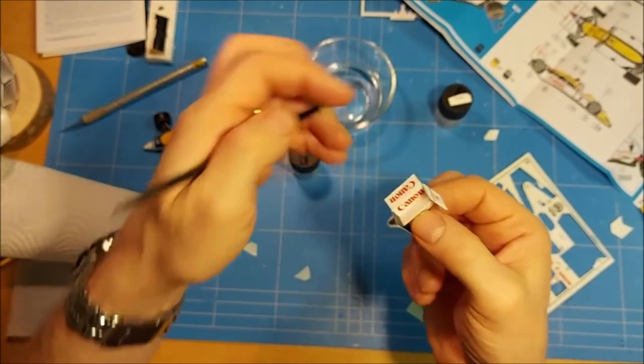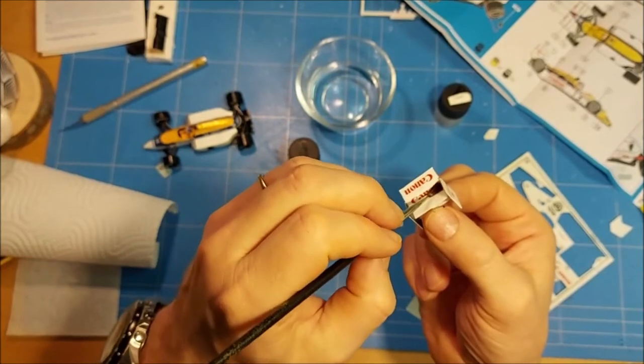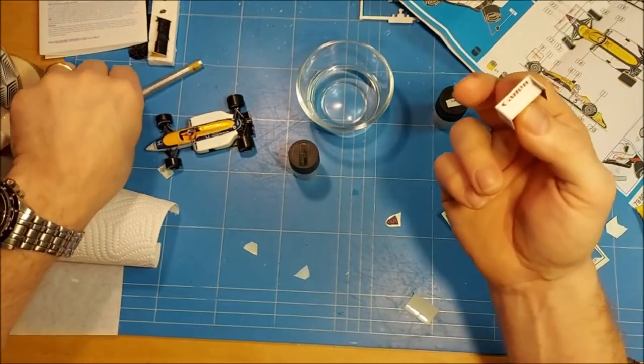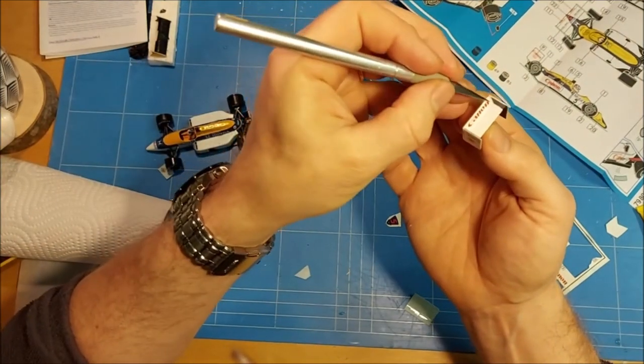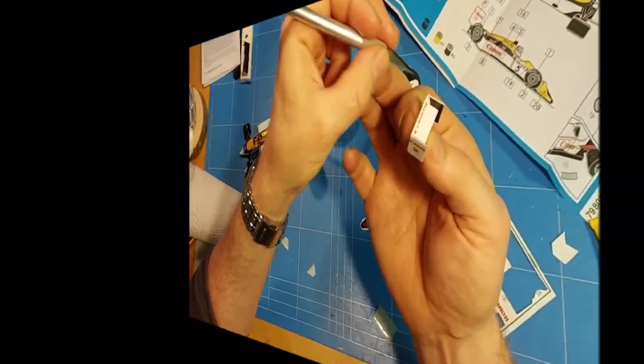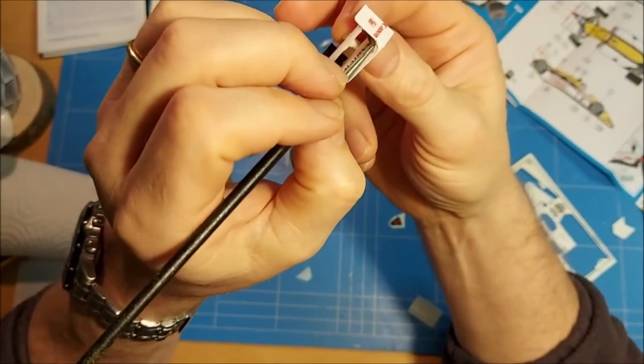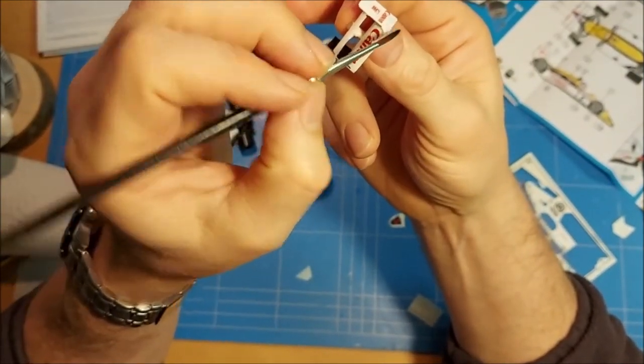I realized that after applying this decal here on the rear wing, I had missed that the wing portion should also be black. So I had to paint that in afterwards. But that works as well.